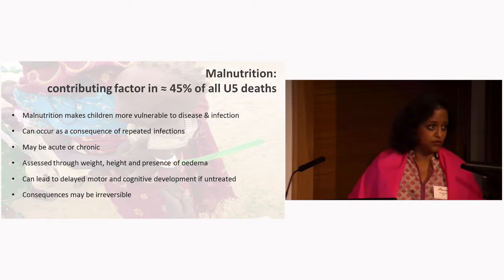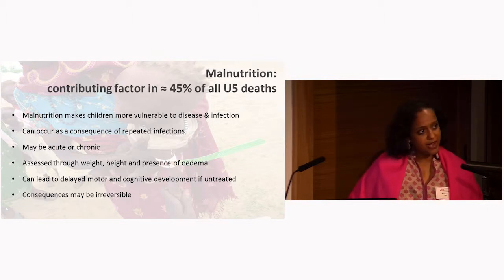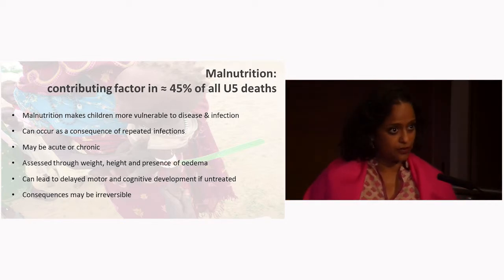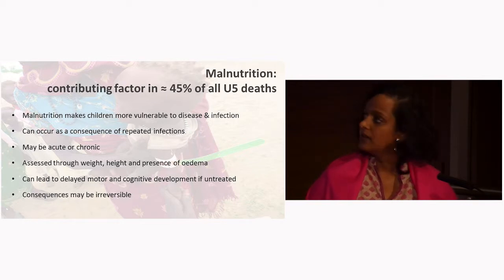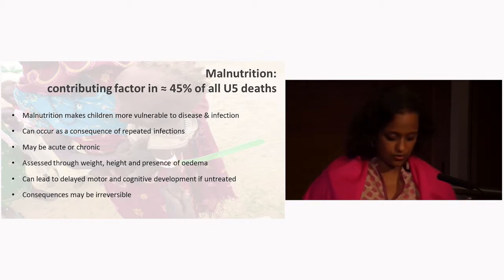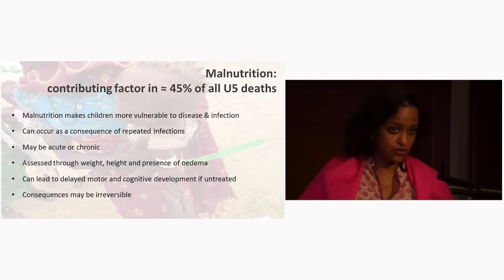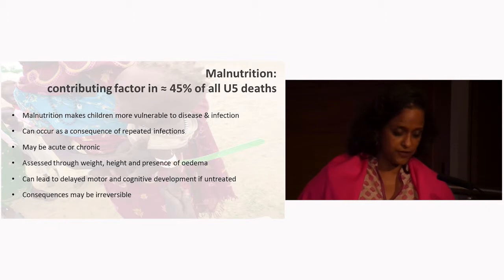Traditionally, and many of you know this already, malnutrition has been assessed by measuring weight and height and then comparing these along a normal distribution of a reference population to define cut-offs for clinical disease. Malnutrition may be acute or chronic. Chronic, also called stunting, is defined as low height for age and generally happens before two years of age due to long-term nutritional deficiencies, often coupled with repeated infections.